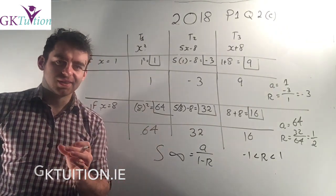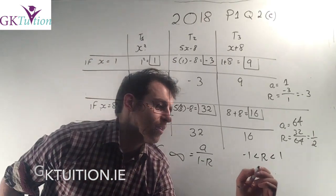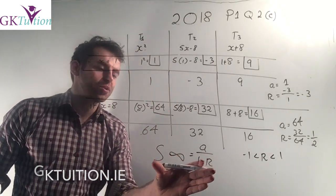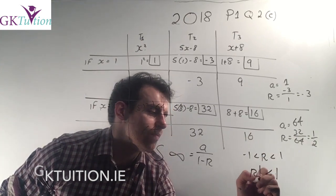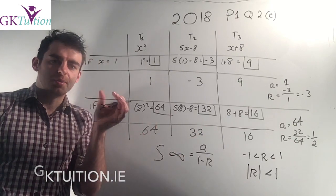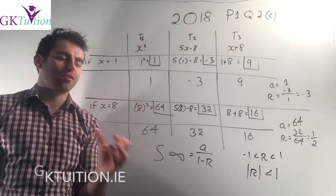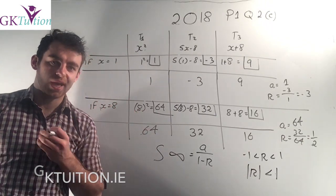In the log tables, it actually says that if you look at your log tables beside the formula for the sum to infinity, it tells you that you can only use this formula if 1 is greater than the absolute value of r. And that's just another way of saying that r has to be between 1 and minus 1. So the first answer to that is there's a finite sum to infinity when x equals 8.